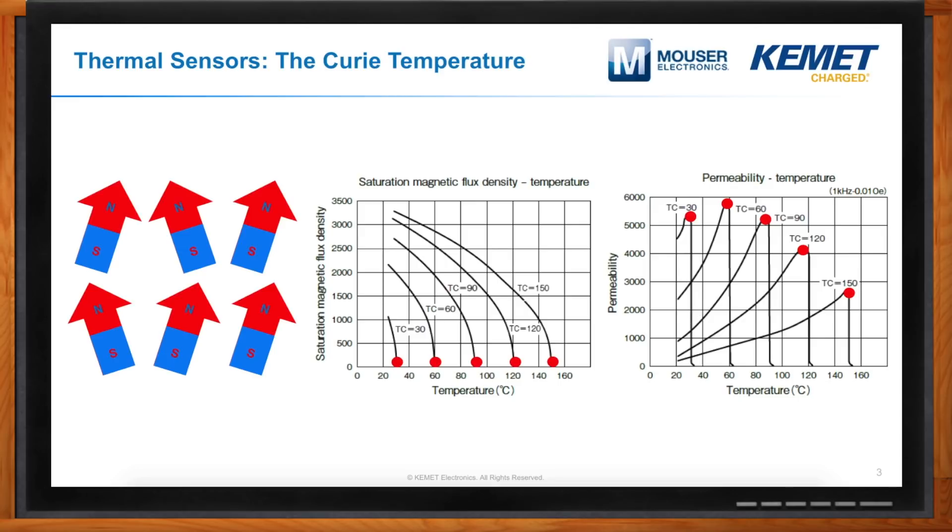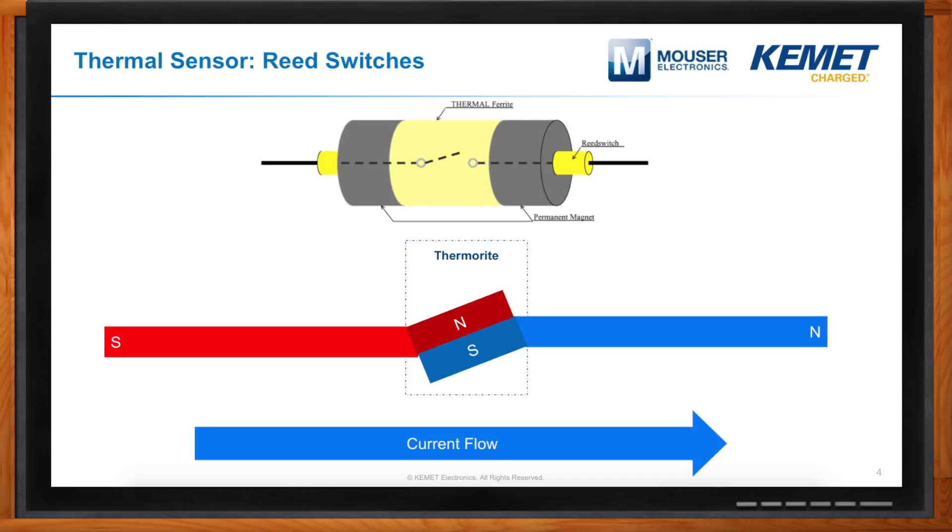Okay, so what exactly can we do with that? And why does it matter that we can control the Curie point? So, with that, we can make what are called thermal sensor reed switches. So, a reed switch is a device that has two conductors lined up in parallel with one another, and there's a slight overlap.